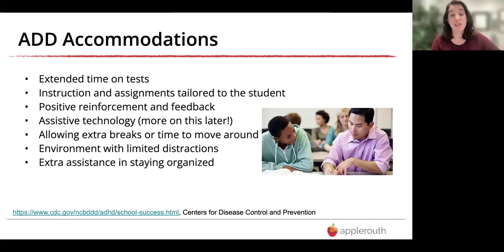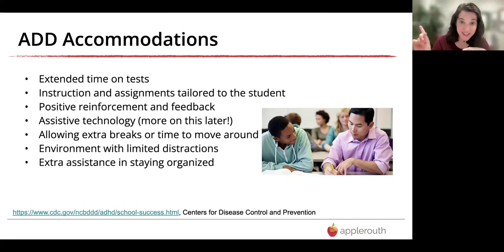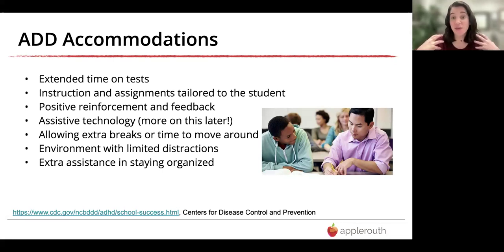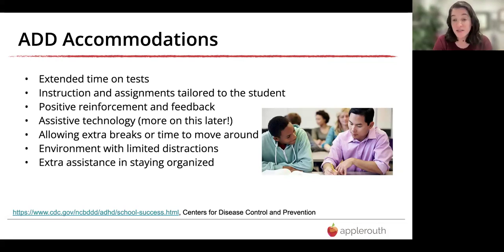For students with ADD or ADHD, specific accommodations typically include: extended time on tests; instruction and assignments tailored to the student; positive reinforcement and feedback; assistive technology; allowing extra breaks or time to move around; an environment with limited distractions such as seating at the front of the classroom; and extra assistance in staying organized.